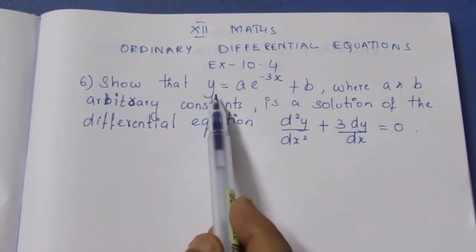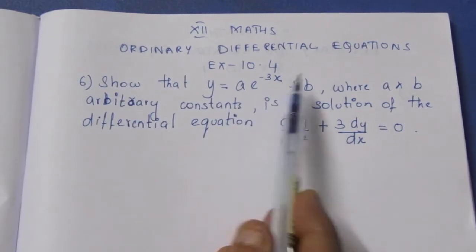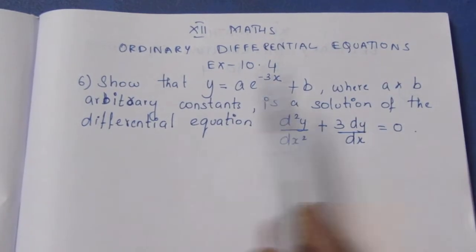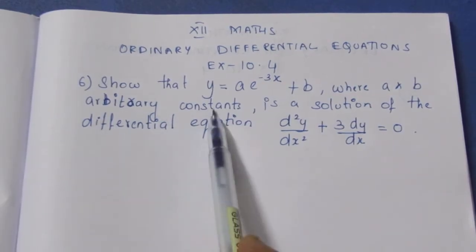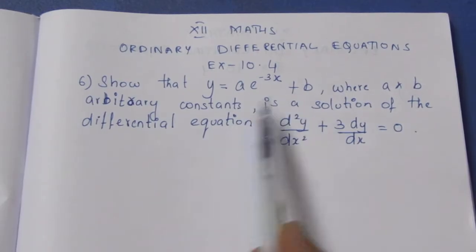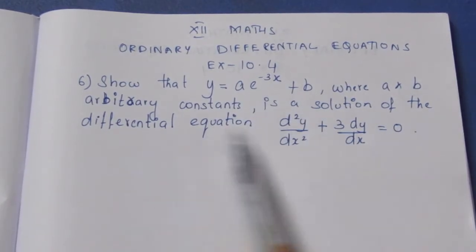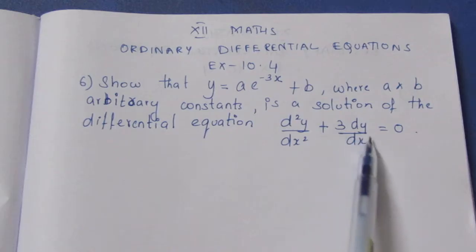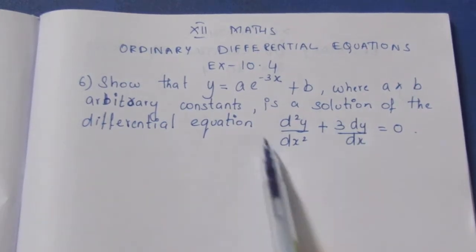The question asks to show that y equals ae to the power minus 3x plus b, where a and b are arbitrary constants, is a solution of the differential equation d squared y by dx squared plus 3 dy by dx equals 0.